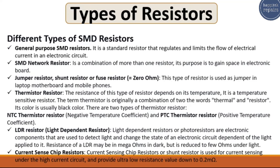The next resistor is the LDR or light dependent resistor. Light dependent resistors, also called photo resistors, are electronic components used to detect light and change the state of an electronic circuit depending on the light applied to it. The resistance of an LDR may be in mega-ohms in the dark but is reduced to a few ohms under light.